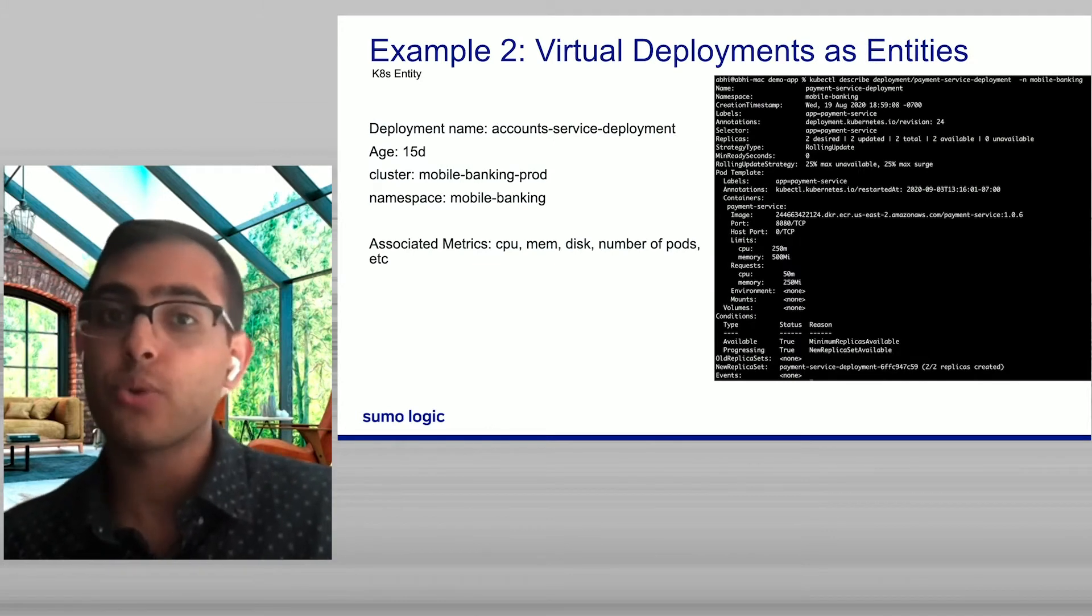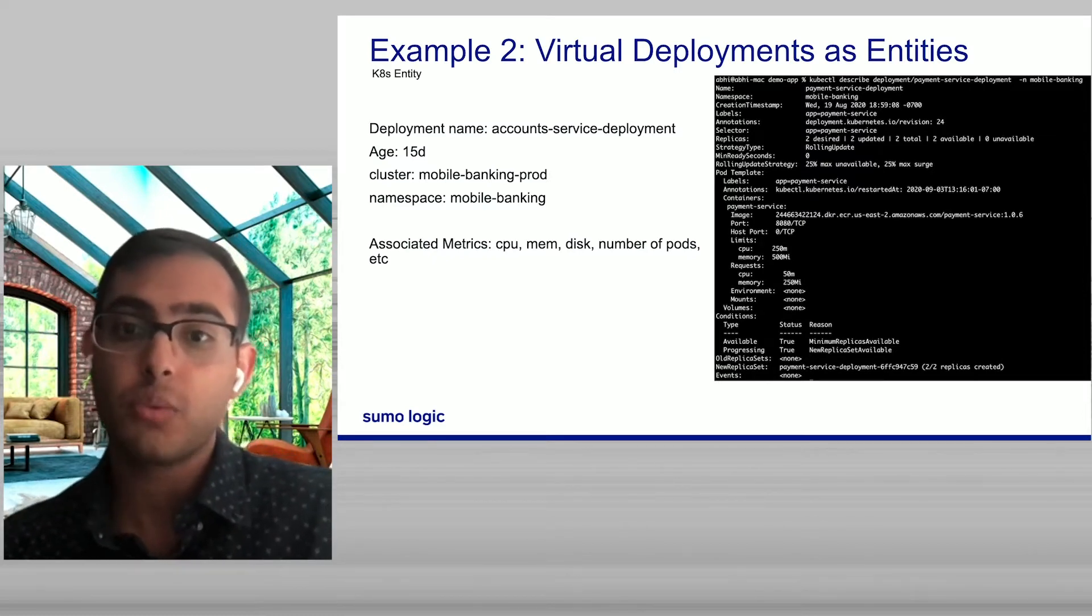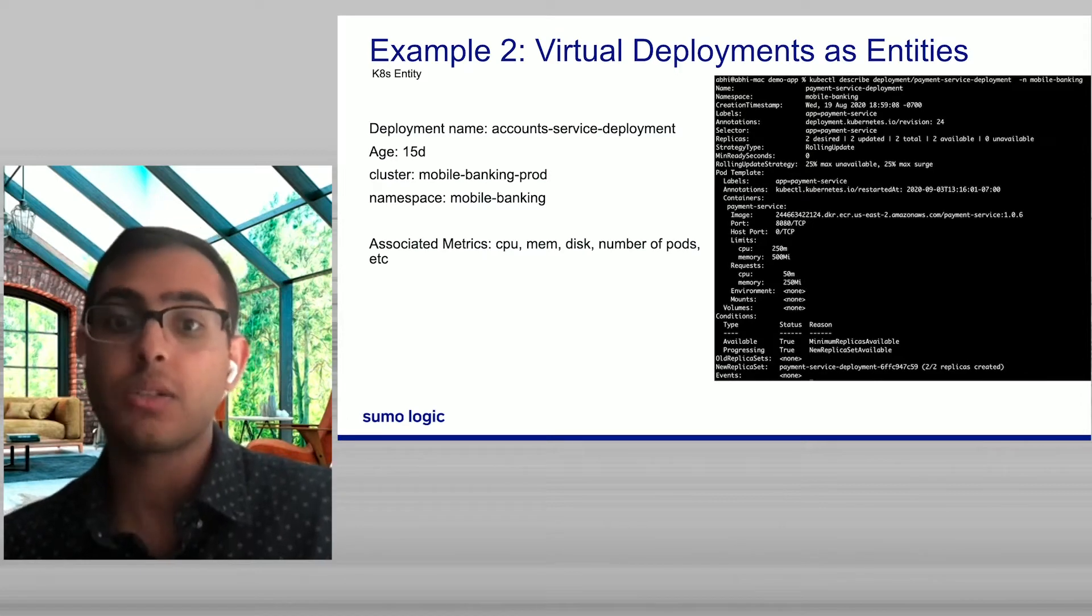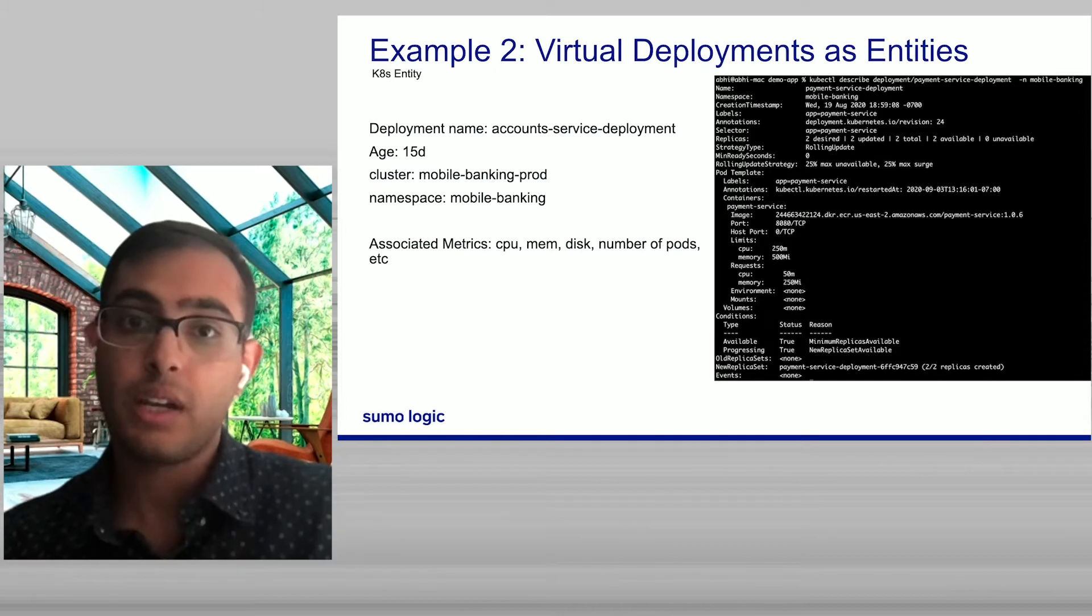And we might even look at this in a virtual sense. So in Kubernetes, we've got these virtual concepts and objects like deployments and services, namespaces, and they all, too, have their own configuration definitions. They act kind of like entities in the Kubernetes domain. In this case, in this deployment here on the right, we see that it has a bunch of these properties, such as deployment name, how long it's been around, cluster, namespace, and certain associated metrics like CPU, mem, disk, number of pods, et cetera. This, once again, binds this entity together and allows us to understand the behavior that this entity will have.